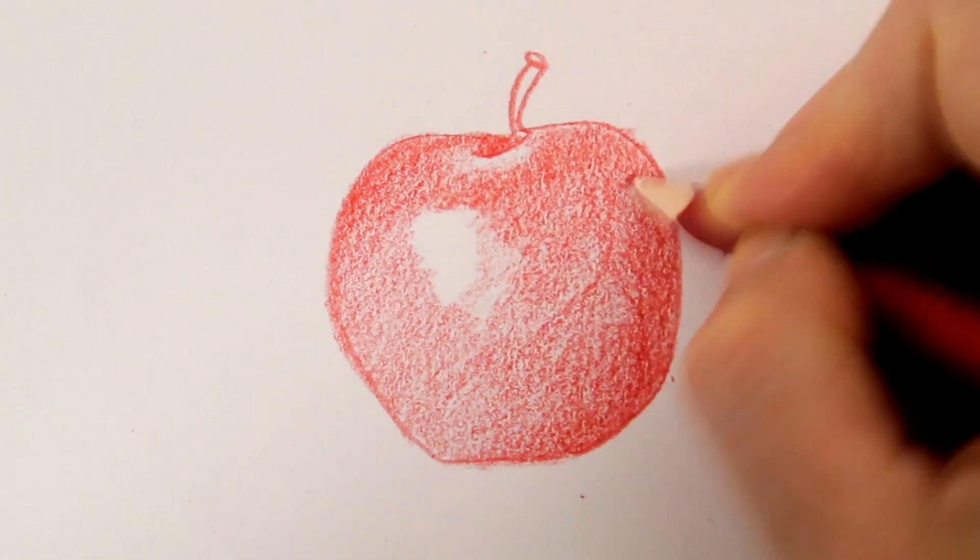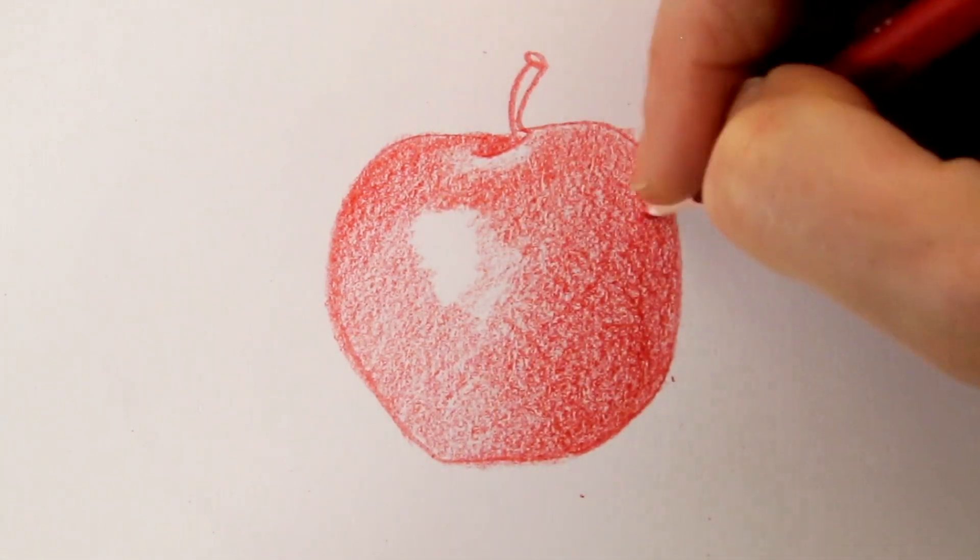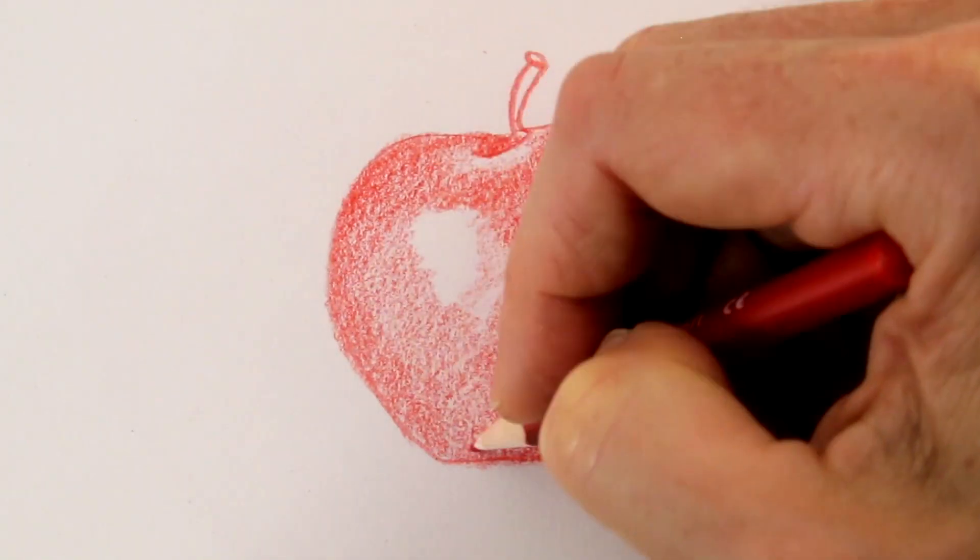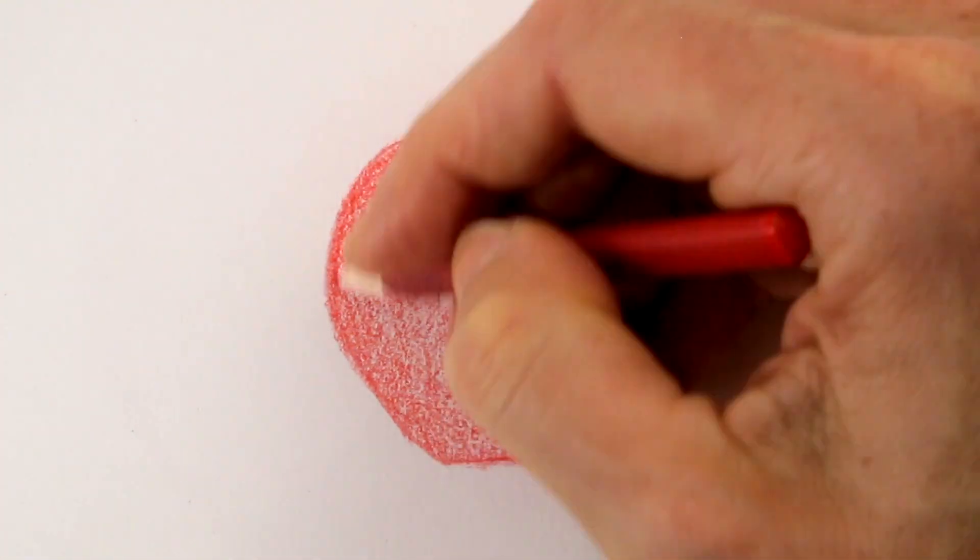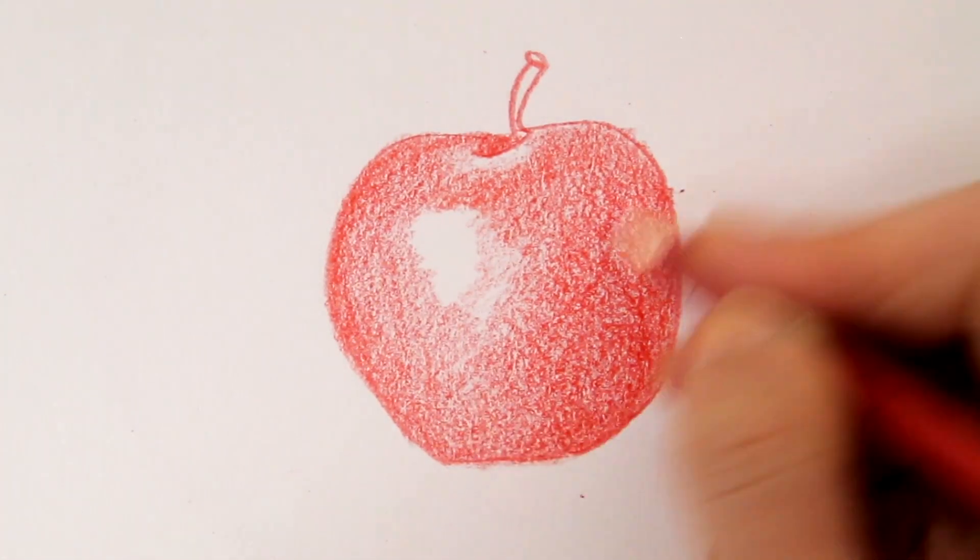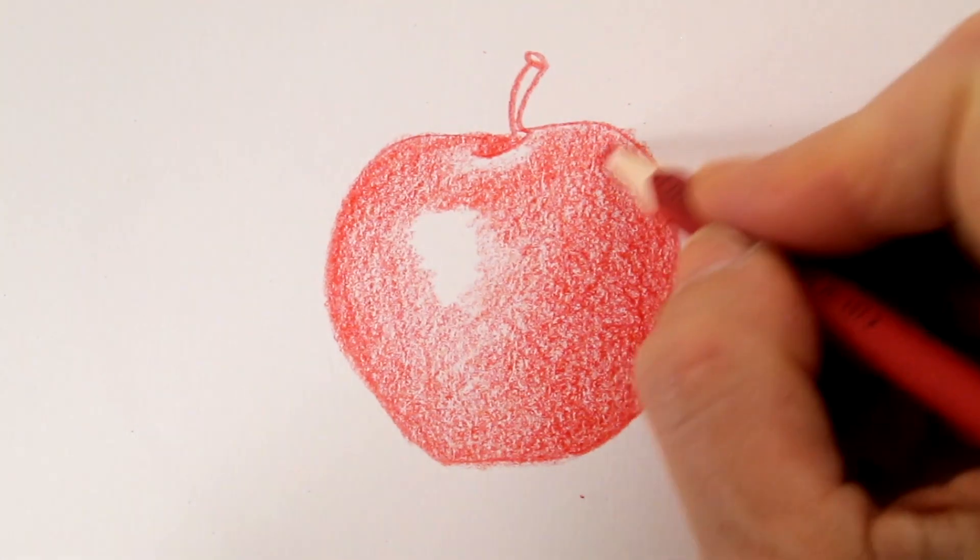The apple I am drawing here would be lit from the front left, which means the right hand side of the apple is shaded. The further the apple curves from the light source, the darker the shading.